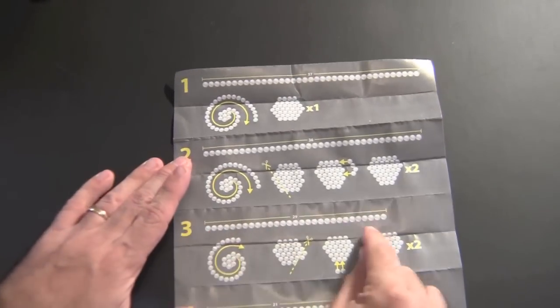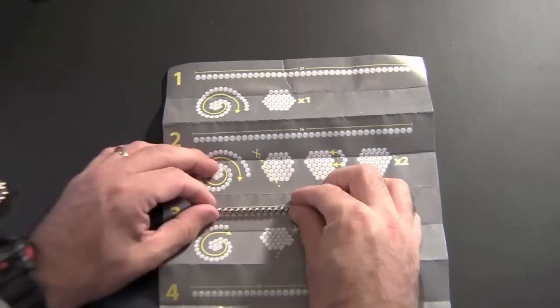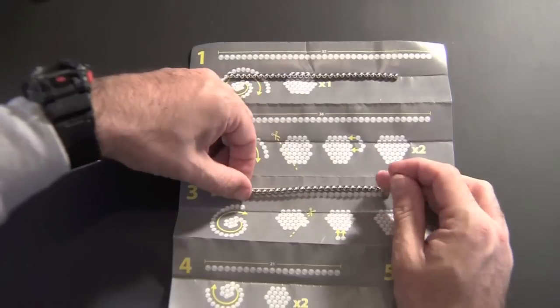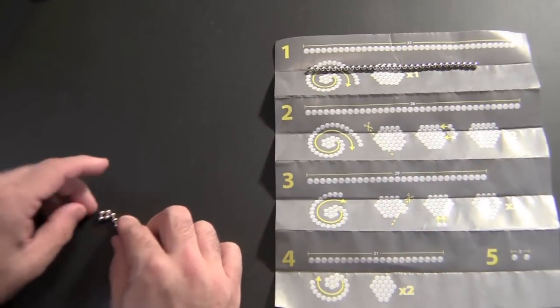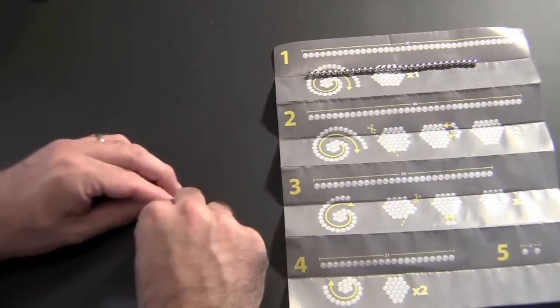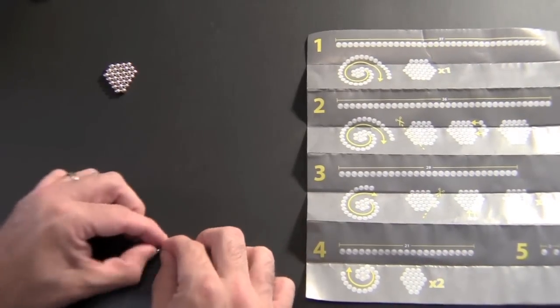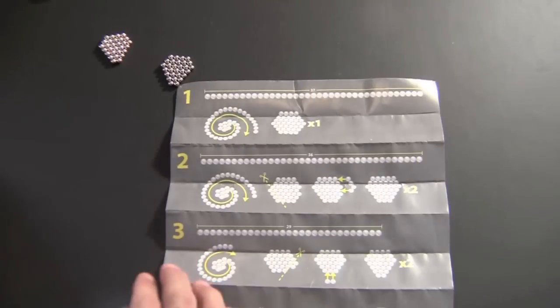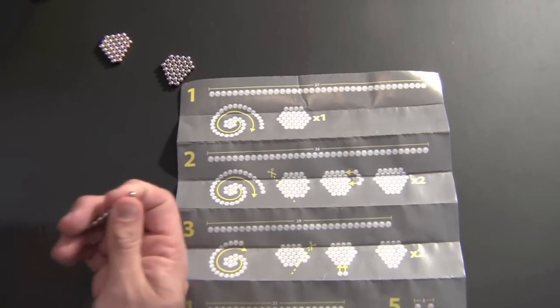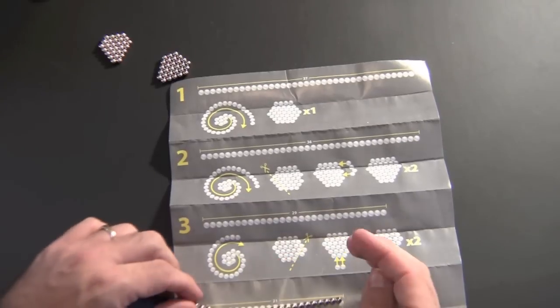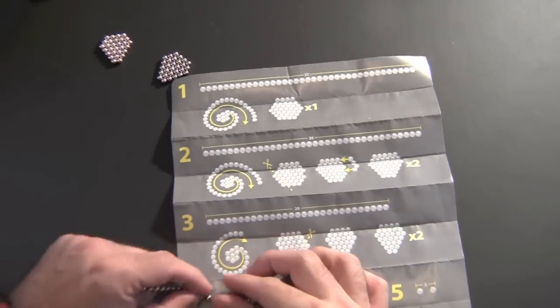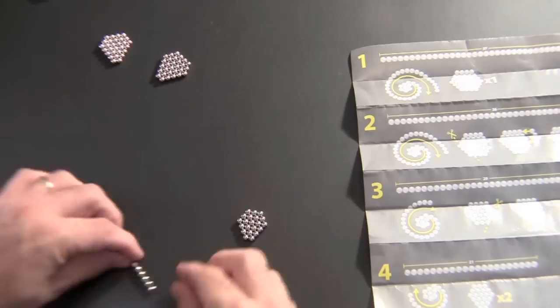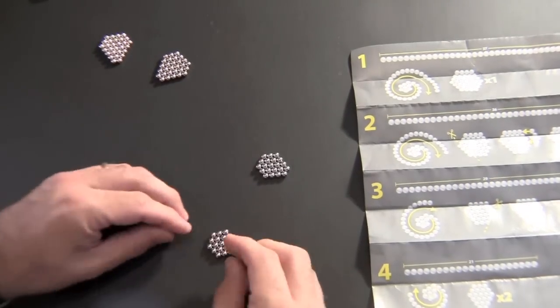Then I'll go on to step number three. I need two strips of 29 for step number three. Okay, let's go on and make the forms for step number three. And there's two. Now we're on to the final step. I need two pieces of, two strips of 21 each. And there we go.